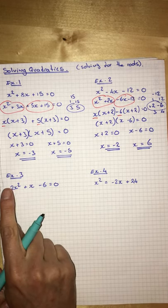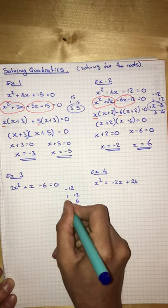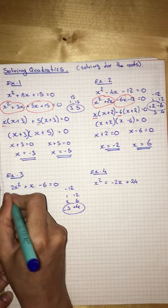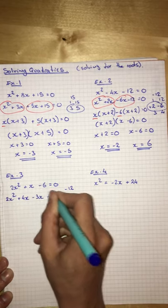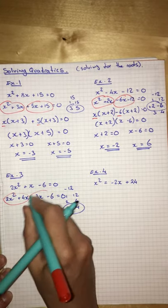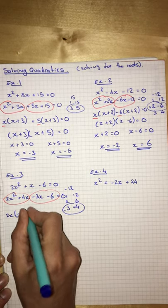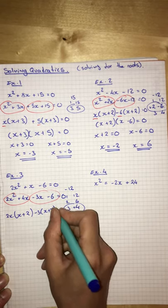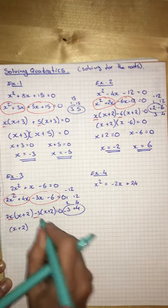Two more. First times last. One, twelve, two, six, three, four. One's got to be positive, one's got to be negative. So, we're going to have to have positive and negative there. 2x squared plus 4x minus 3x minus 6 equals 0. Common factor of 2x. Common factor of negative 3. Which means we're going to have x plus 2 and 2x minus 3.